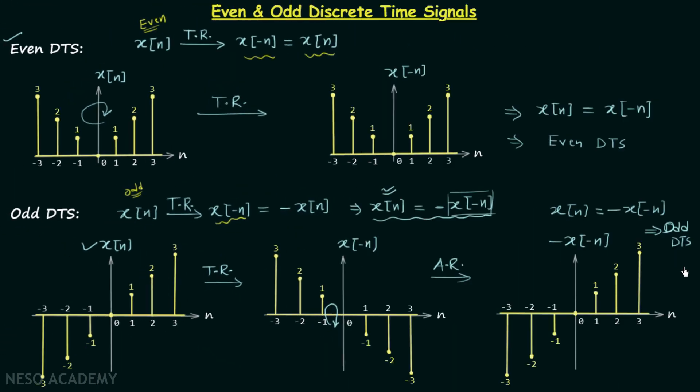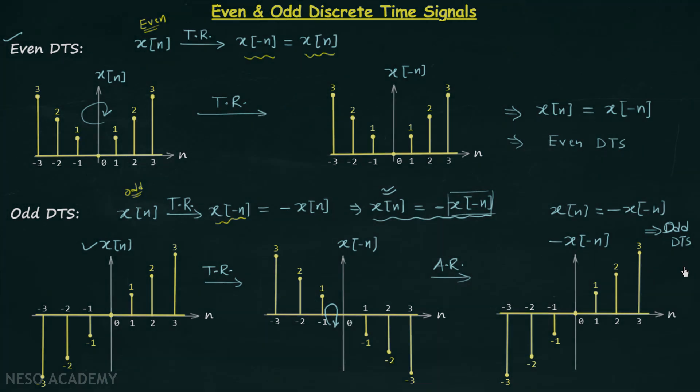We already had enough knowledge about even and odd continuous time signals, and therefore understanding even and odd discrete time signals is not difficult. I hope you now have a clear understanding of discrete time signals which are even and odd in nature. I will end this lecture here — see you in the next one.